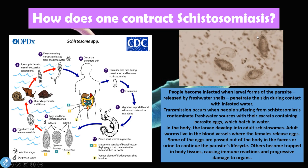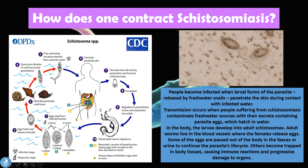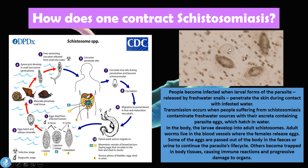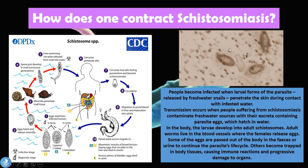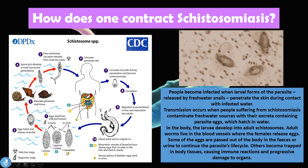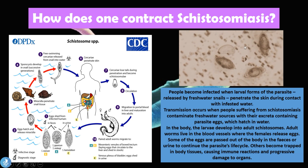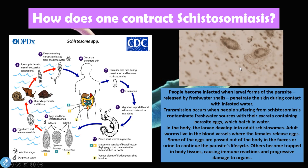In the image on the top right side of the screen, we have a microscopic view of what Schistosoma eggs look like. These are the eggs that can be identified from stool or urine samples collected from the patient.